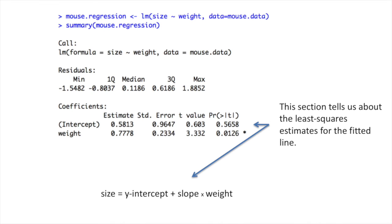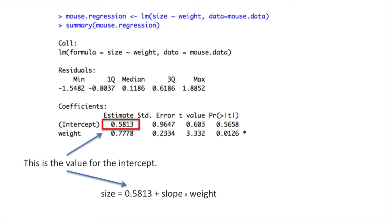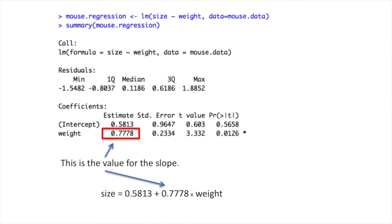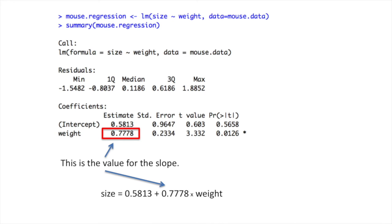This next section tells us about the least squares estimates for the fitted line. This value is for the intercept, and this value is for the slope. The standard error of the estimates and the t-value are both provided to show you how the p-values were calculated. These p-values test whether the estimates for the intercept and the slope are equal to zero or not. If they're equal to zero, that means they don't have much use in the model.